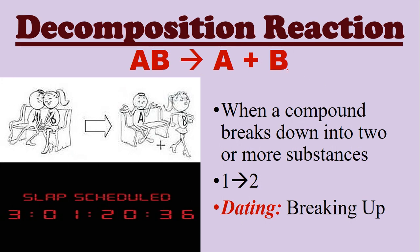A decomposition reaction is when you have one substance AB and it splits to A plus B — a compound is broken down into two or more substances. On the left side of the arrow you have one compound; on the other side you have two or more. In the dating analogy, a couple is dating and then they break up because someone did something stupid in the relationship. That's a decomposition reaction — the breakup.